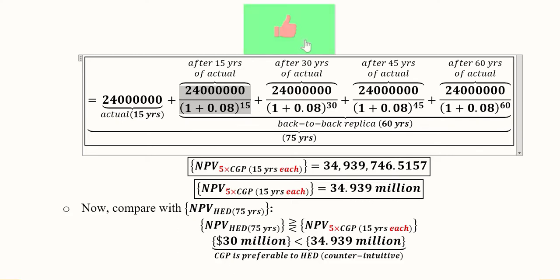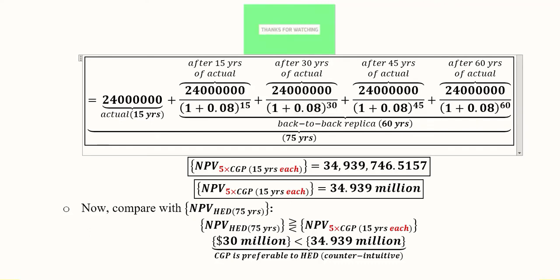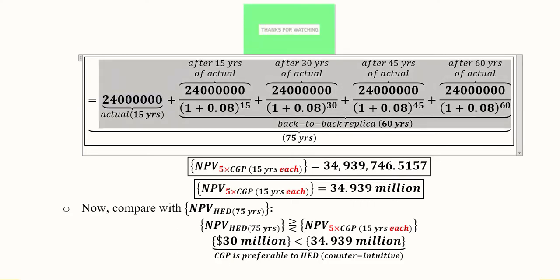The first replica uses a time of 15 because after the original project we have moved 15 years forward. The second replica uses 30, because the original 15 plus another 15 equals 30. The third replica adds another 15 making it 45, and the fourth makes it 60. So back-to-back replicas conducted for 60 years, plus the original 15, gives an overall span of 75 years.